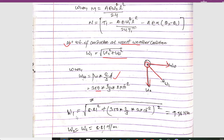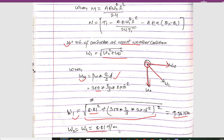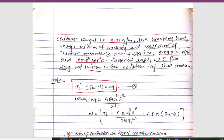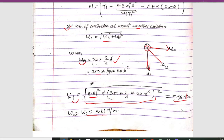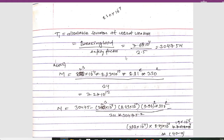Solving for ww and using wc = 8.81 Newton per meter, we can now find the value of w1 = √(wc² + ww²), which gives w1 = 9.96 Newton per meter. For fair weather conditions, w2 = wc = 8.81 Newton per meter. We are also given the breaking load and safety factor, from which we will calculate t1.